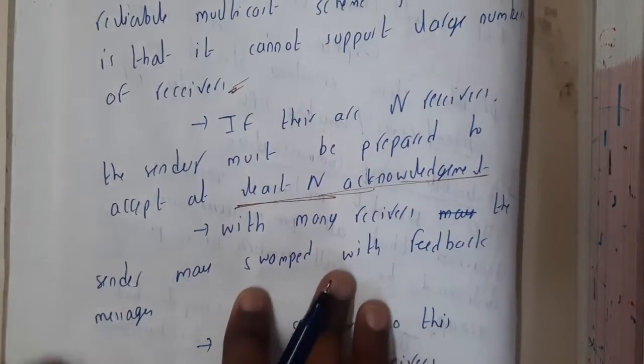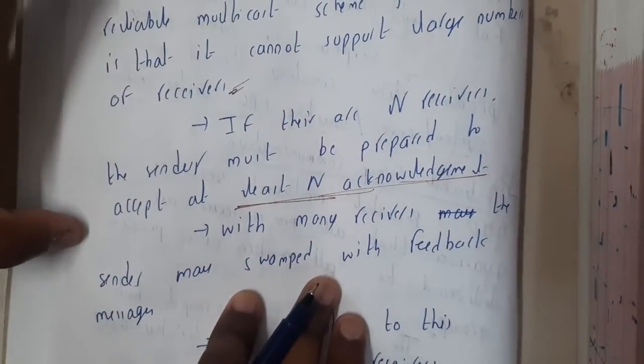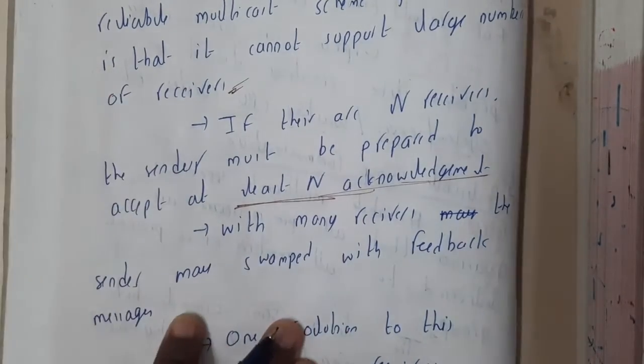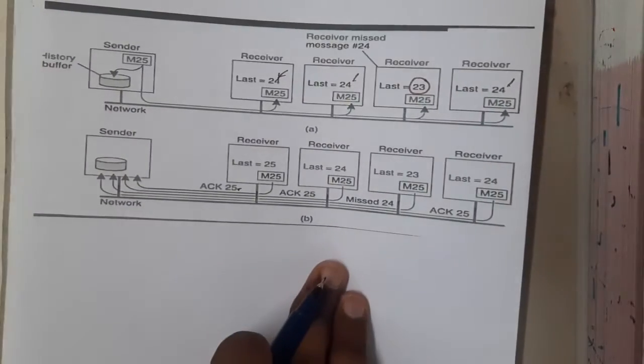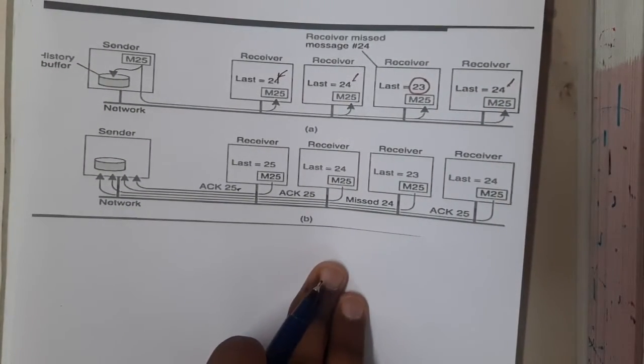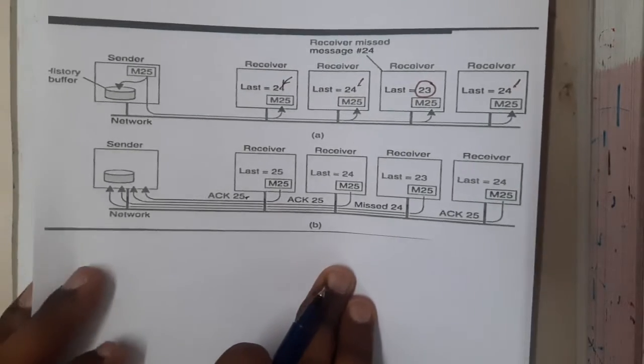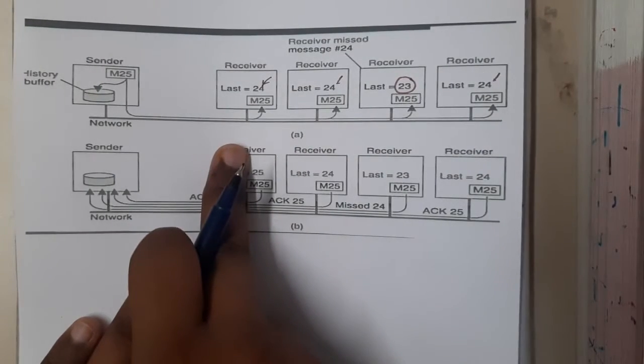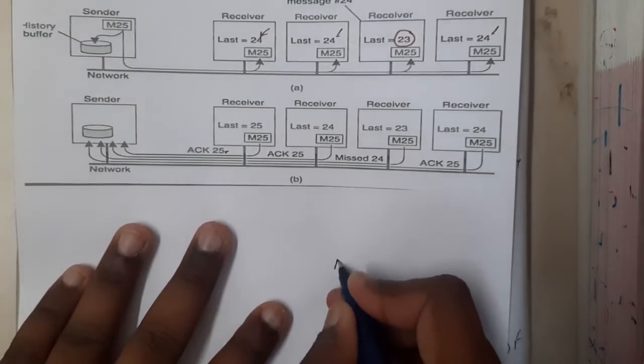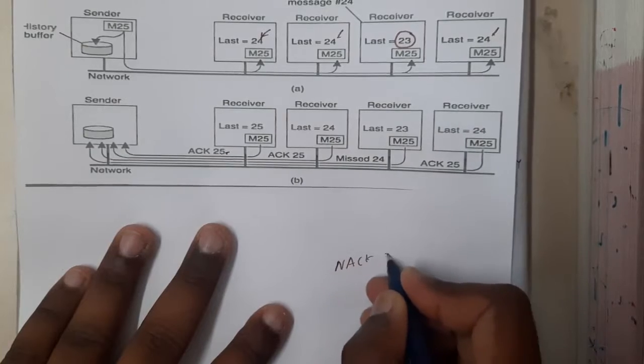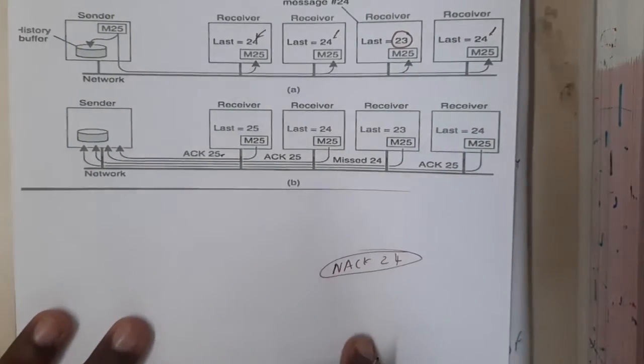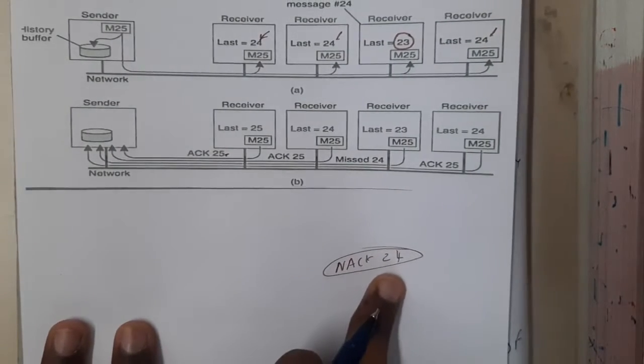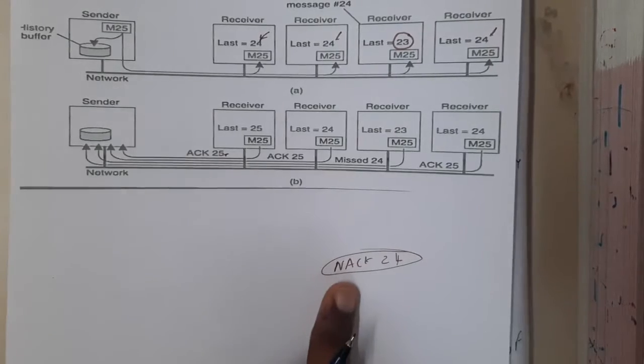To resolve this issue, we are using a simple idea. Why should I send the data that I received? I can be silent also. So only the missing members will be sending the negative acknowledgement. Instead of missing 24, it will be sending NACK 24, negative acknowledgement for 24. It is indirectly saying, "Okay, I did not get it, I am not accepting this 25th packet and I need the 24th packet."